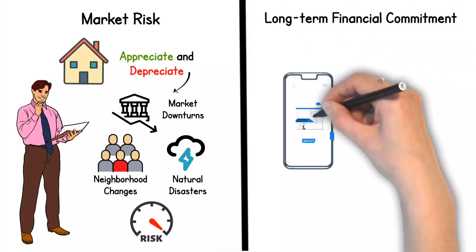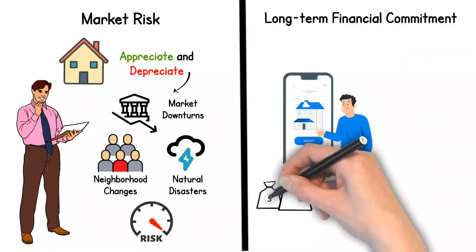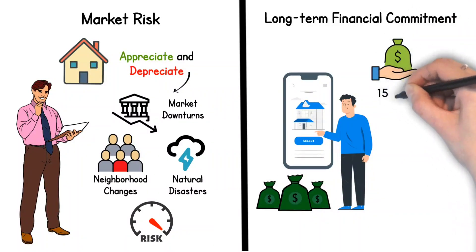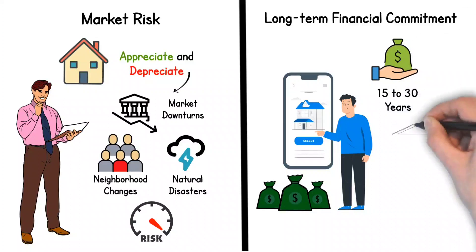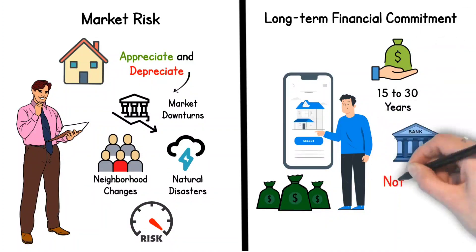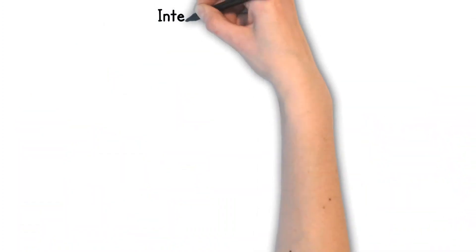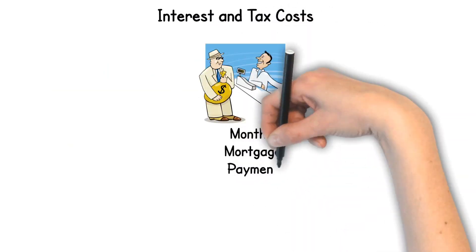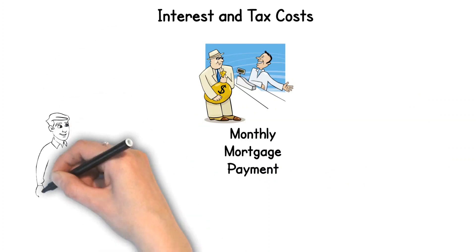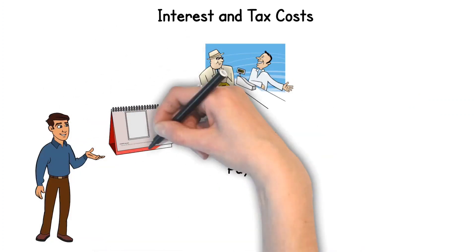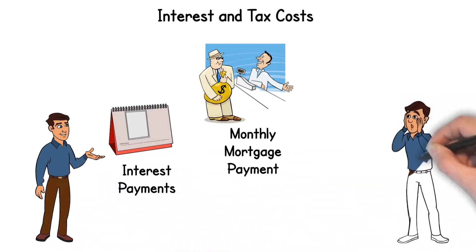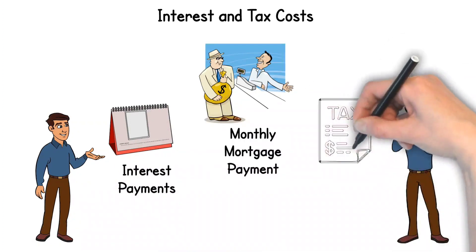Long-term financial commitment. Owning a home requires a long-term financial commitment. Depending on your mortgage terms, you could be making payments for 15 to 30 years. This requires a steady income stream and may not be suitable for everyone. Interest and tax costs. While your monthly mortgage payment may seem like it's going directly into your pocket, a significant portion of it, particularly in the early years of your mortgage, goes towards interest payments. Plus, homeowners are responsible for property taxes, which can be a considerable annual expense.